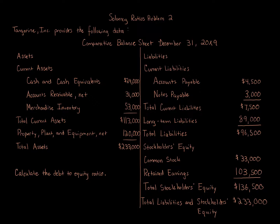Liabilities: current liabilities include accounts payable $4,500, notes payable $3,000, for total current liabilities of $7,500. Long-term liabilities $89,000, for total liabilities of $96,500. Stockholders' equity: common stock $33,000, retained earnings $103,500, for total stockholders' equity of $136,500. Total liabilities and stockholders' equity $233,000.